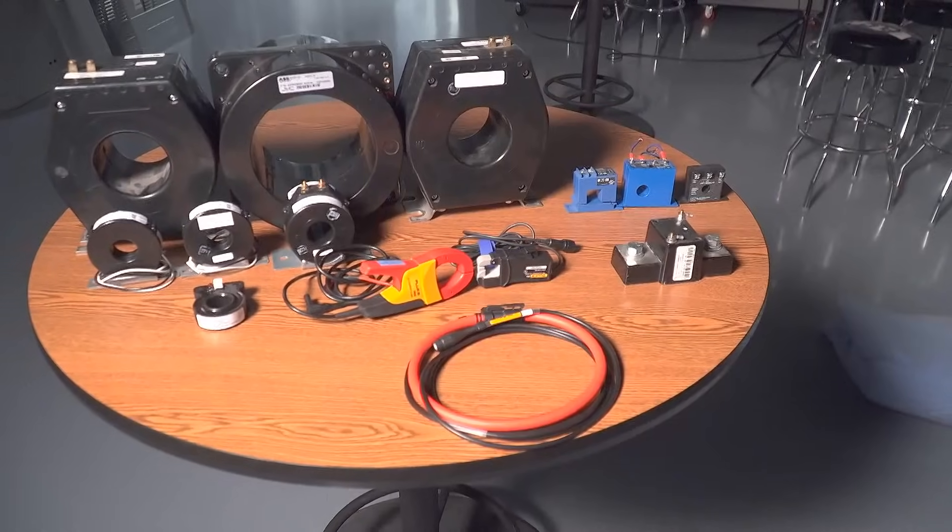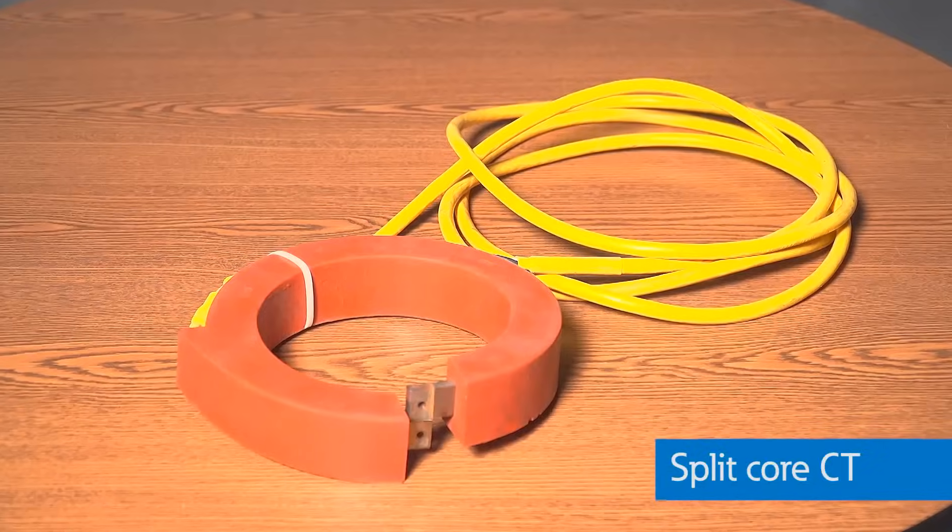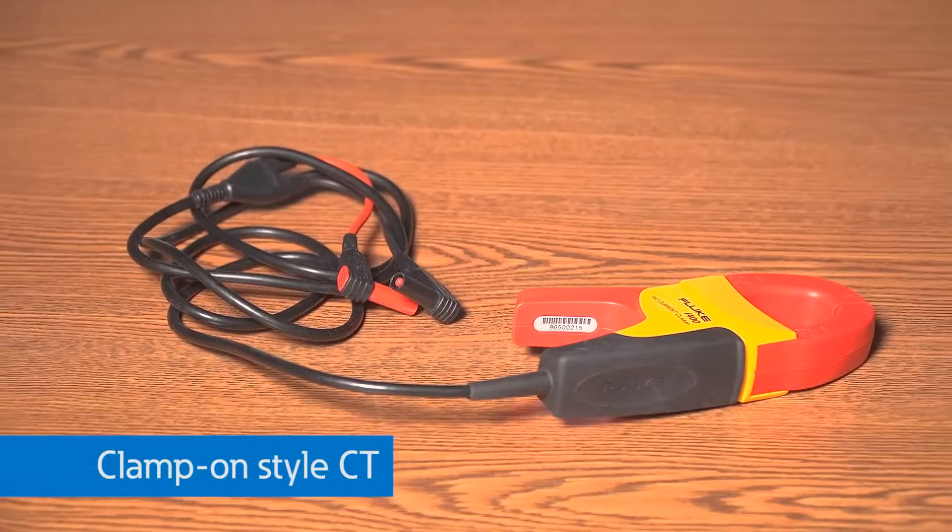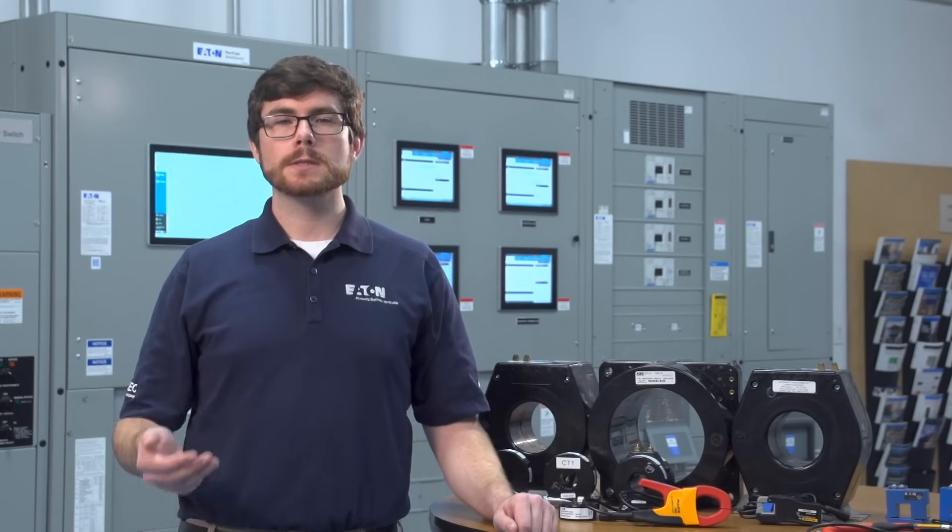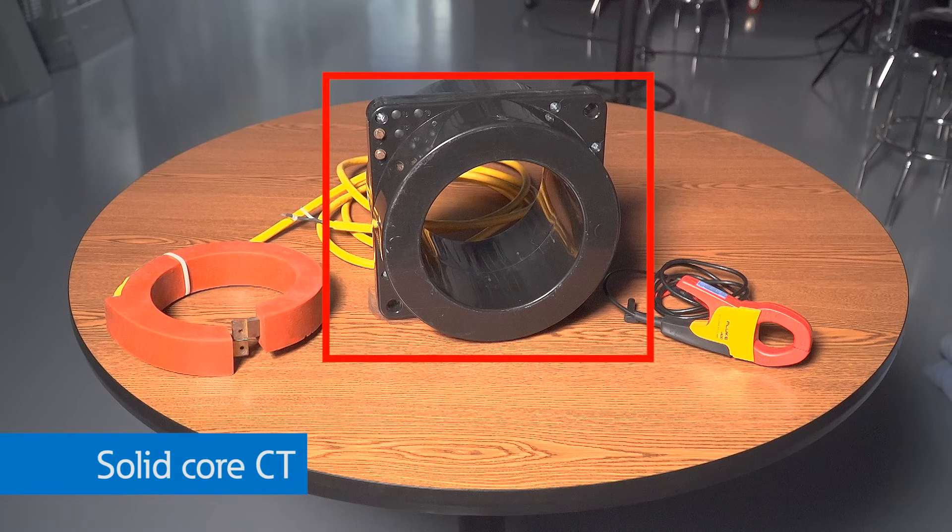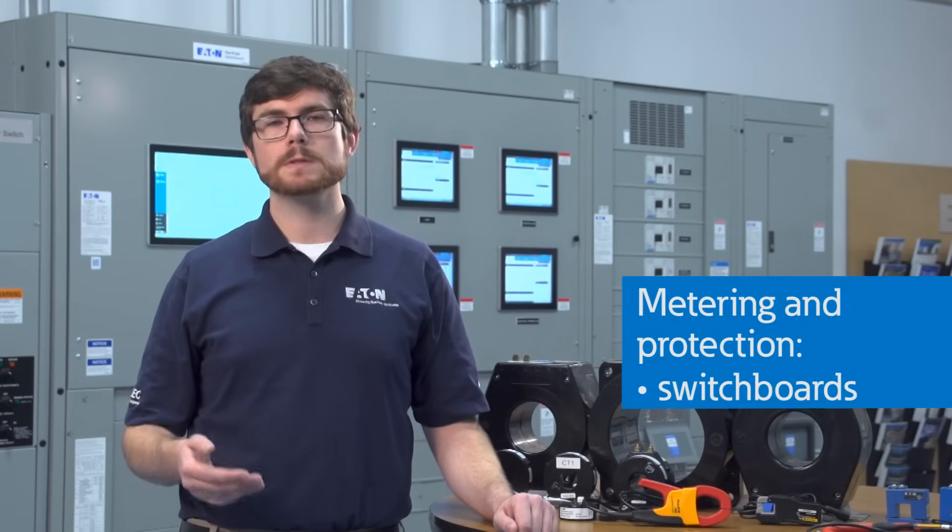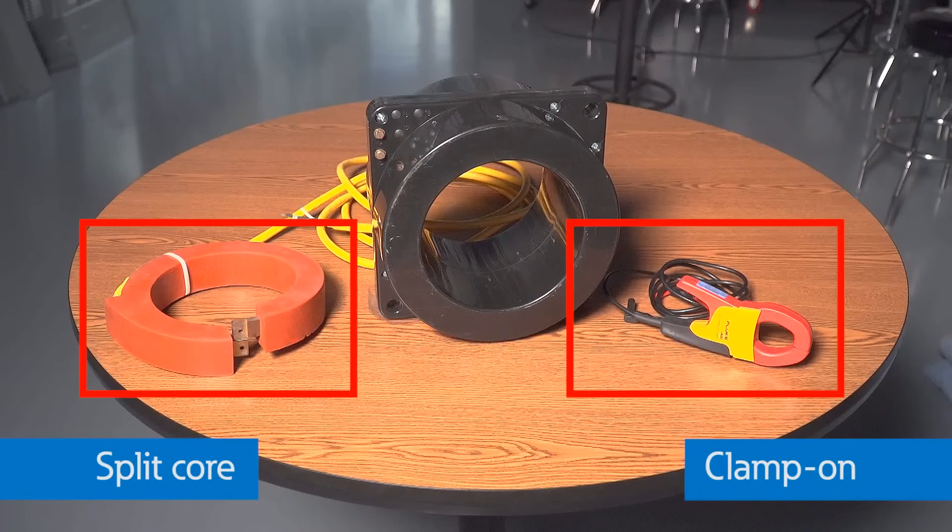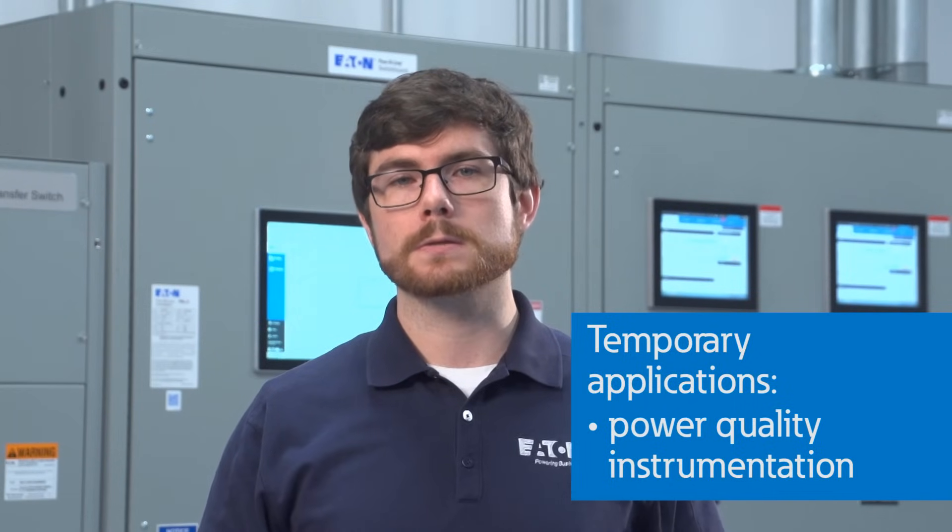Current transformers are primarily used for metering and protection applications and come in various sizes, shapes, and ratings. CTs can be solid core, split core, or clamp-on styles for both low-voltage and medium-voltage applications. Solid core CTs are generally more permanent and are most commonly found for metering and protection in switchboards, panel boards, and switchgear. Split core and clamp-on CTs are generally used in more temporary applications such as power quality instrumentation.